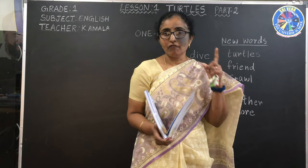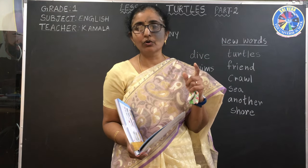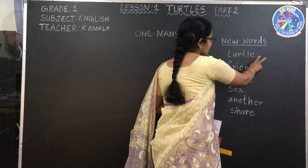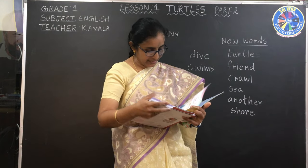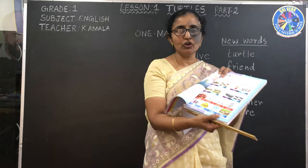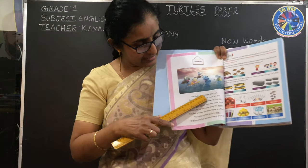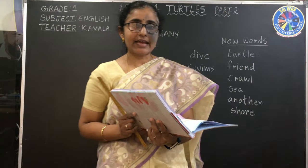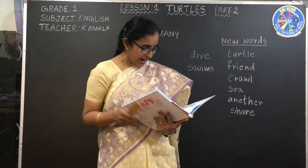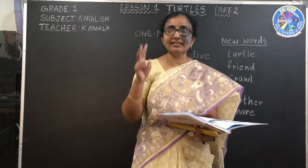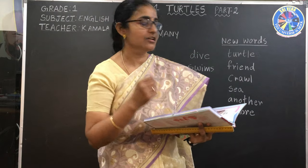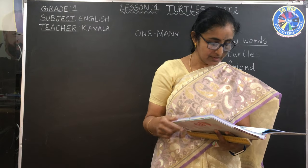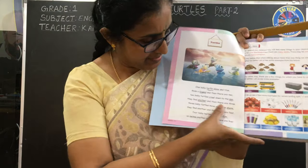Let us start. 'One baby turtle alone and true.' First word to underline is 'turtle' — it's turtle, not turtles. In the first line, underline 'turtle.' Underline means just put a line under the word. Now second line: 'Finds a friend, and then there are two.' The second word is 'friend' — underline 'friend' in the second line.